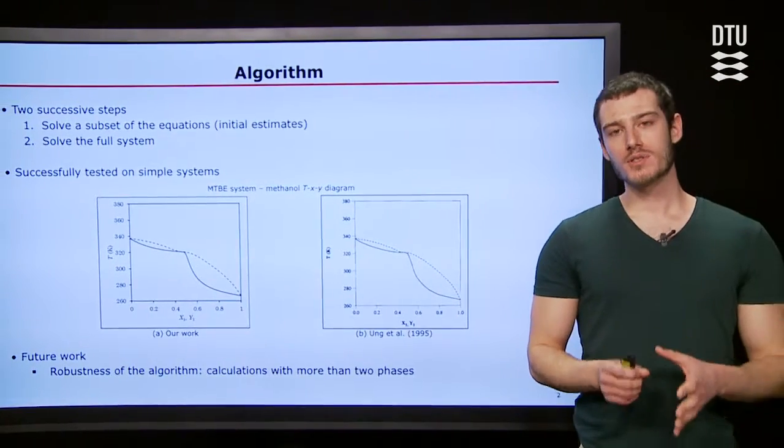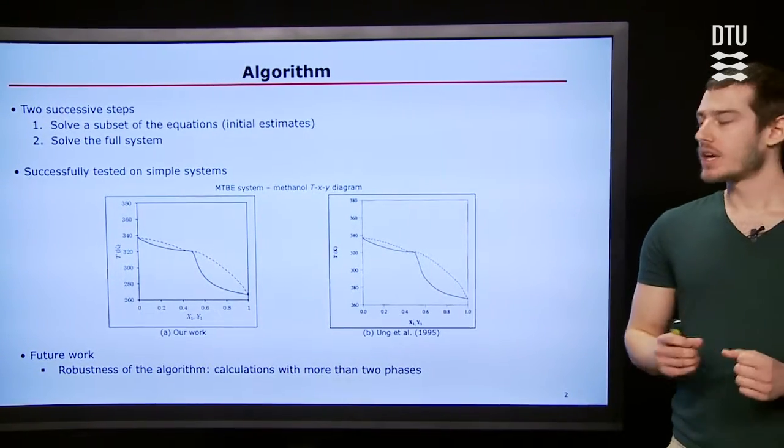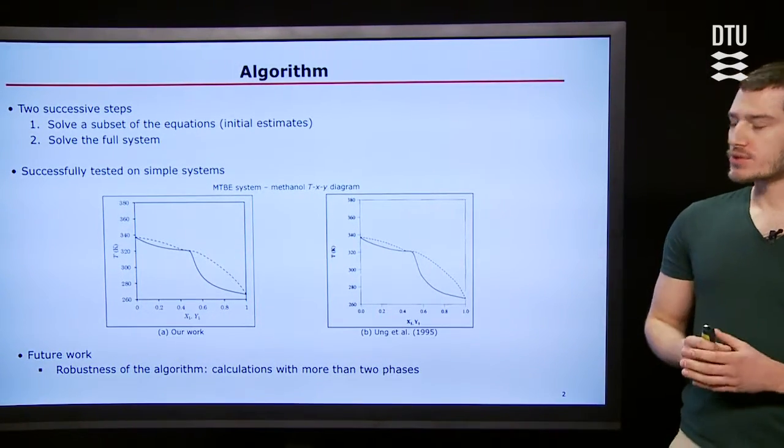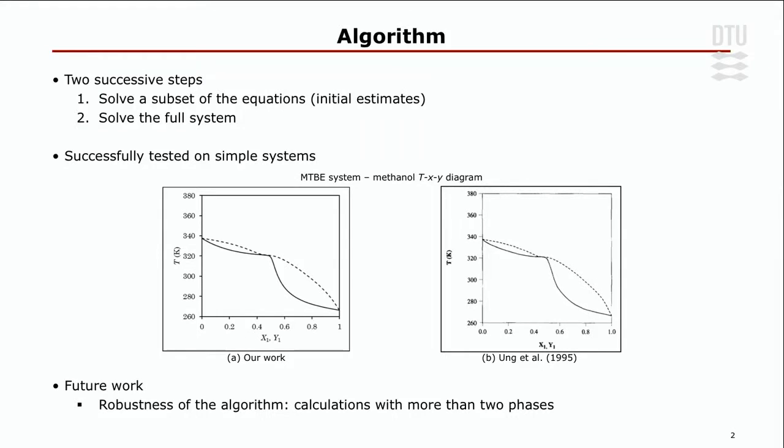Our algorithm consists of two successive steps. There is a number of equations we need to solve, and in the first step we solve just a subset of these equations to get initial estimates that are good enough to ensure convergence in the second step where we solve all the equations simultaneously.